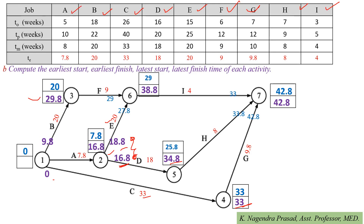For activity A, latest finish time = 16.8 and latest start time = 16.8 − 7.8 = 9. Observe that event 1 is a burst event for activities A, B, and C. Among these three values, we consider the minimum start time, which is 0. So the latest start time for event 1 is 0.